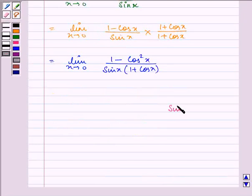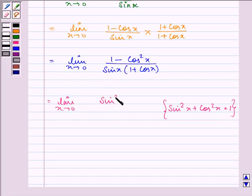We know that sin²x plus cos²x is equal to 1. So we have limit x approaches 0, 1 minus cos²x can be written as sin²x. So we have sin²x divided by sin x multiplied by 1 plus cos x.